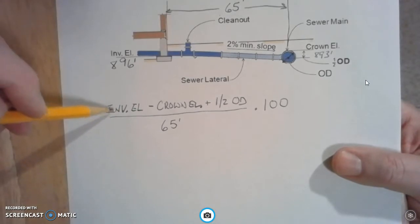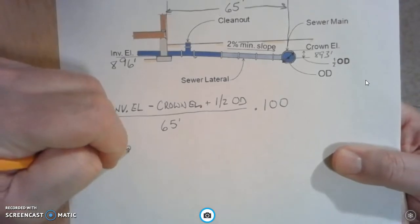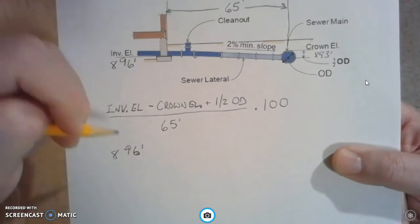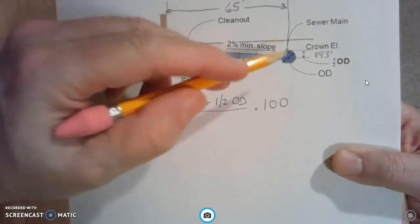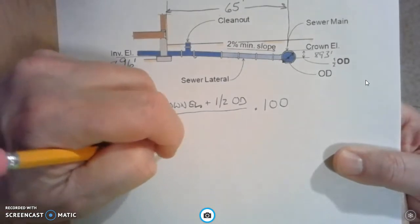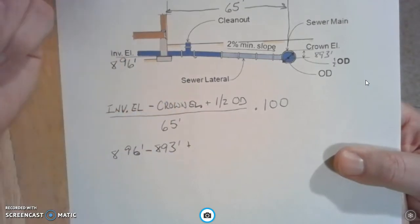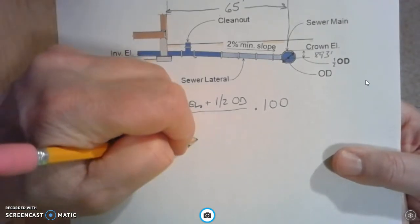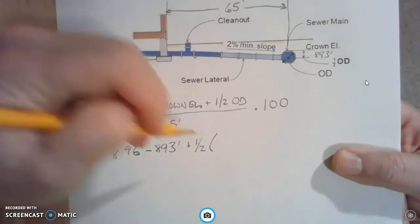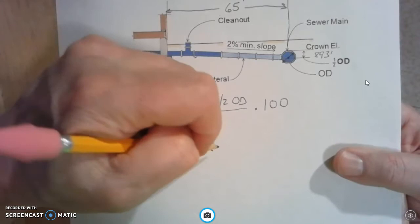Our invert elevation is going to be 896 feet minus the crown elevation which is 893, plus one half of the 12 inch.